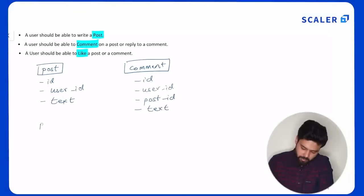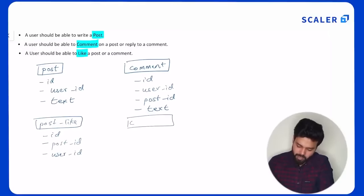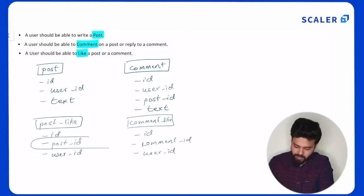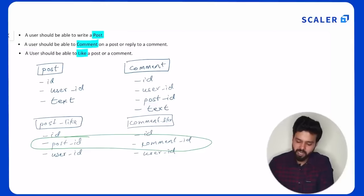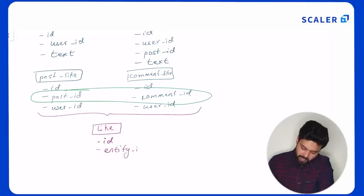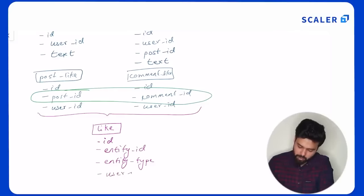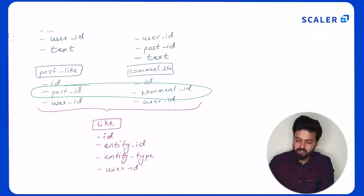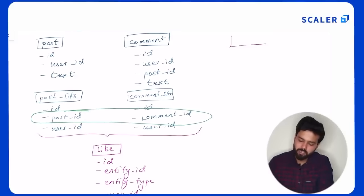For likes, we can have two tables: Post Like with ID, post ID, and user ID; and Comment Like with ID, comment ID, and user ID. We can club these two tables together into a single Like table with ID, entity ID, and entity type — where entity type can currently be either post or comment, and the user who liked it. If we later add blogs, we simply add type equal to blog without creating a new table. So without even adding one more table, the Like table will continue to work.